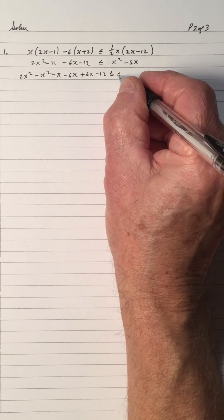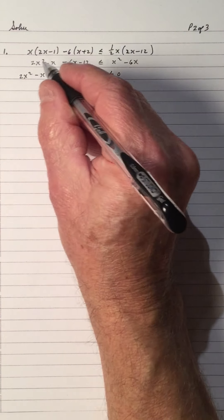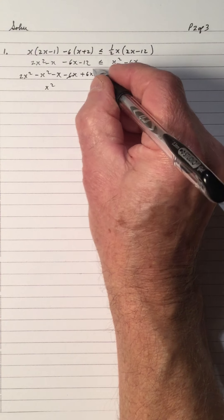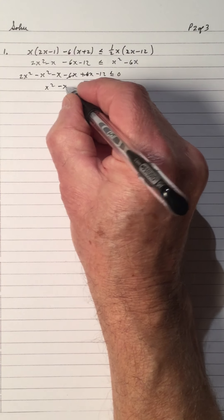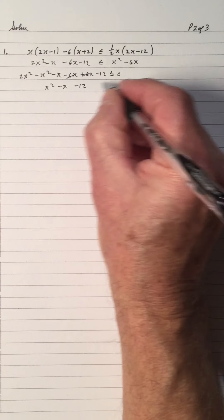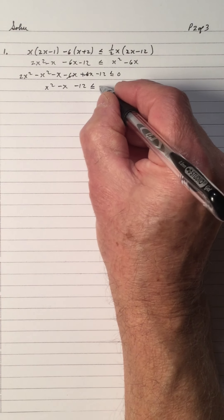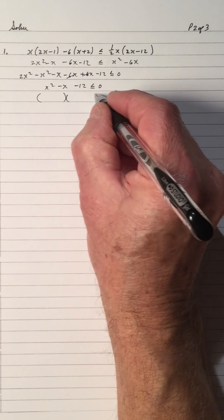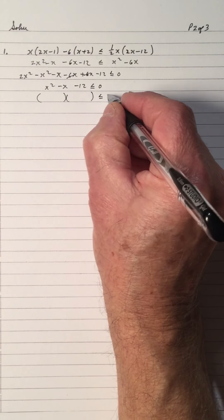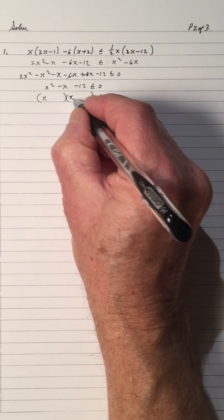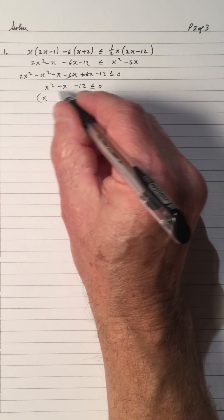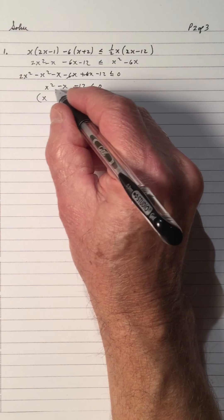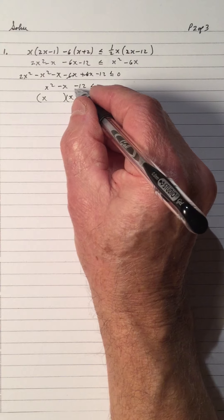We have it equal to 0 because we have a quadratic. 2x squared subtract x squared is x squared, and negative 6 plus 6 is 0, so we have x squared minus x minus 12 less than or equal to 0. The quadratic may be factorable — not always over the integers, but let's check. If we can't factor it, we have to use the quadratic formula.